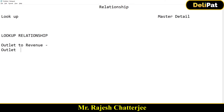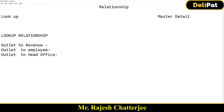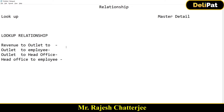Third will be outlet to head office, and fourth will be head office to employee — because head office also has a field called manager. On the left-hand side I'm keeping the child object and on the right-hand side the parent object. So outlet is the child, employee is the parent. Revenue to outlet — revenue would be the child, outlet would be the parent.